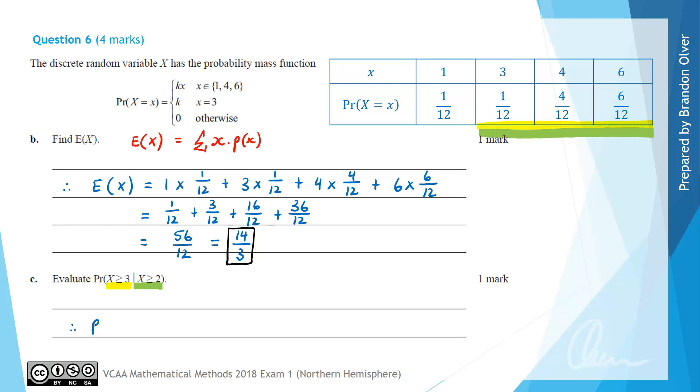So therefore, the probability that x is greater than or equal to 3, given x is greater than or equal to 2, is equal to the probability of the intersection, which is x is greater than or equal to 3, divided by the probability that x is greater than or equal to 2.